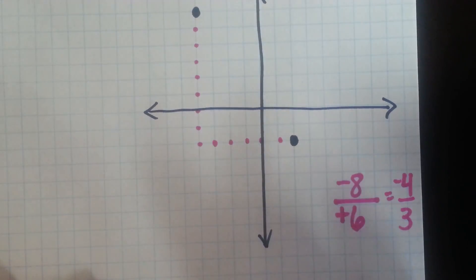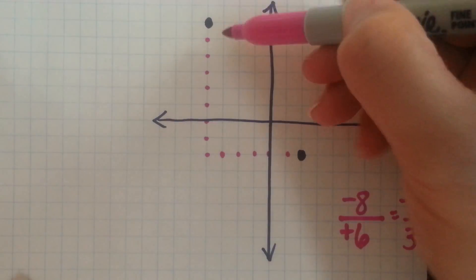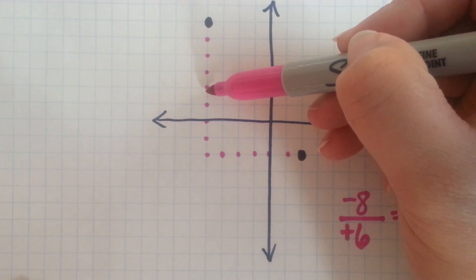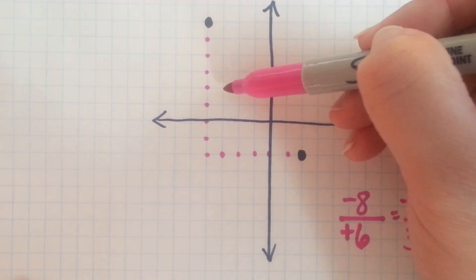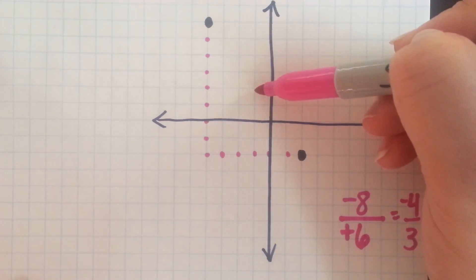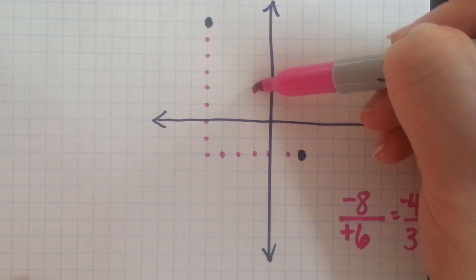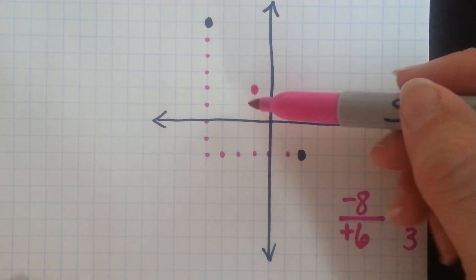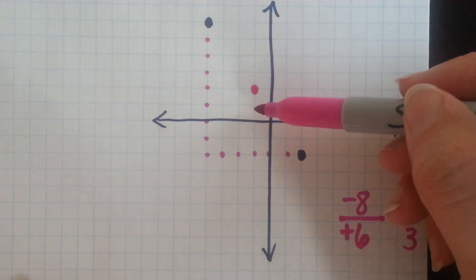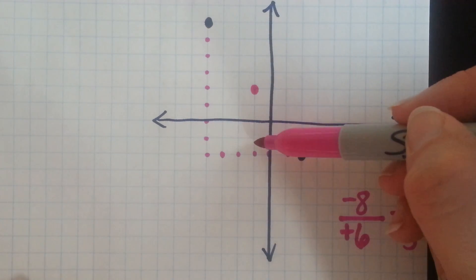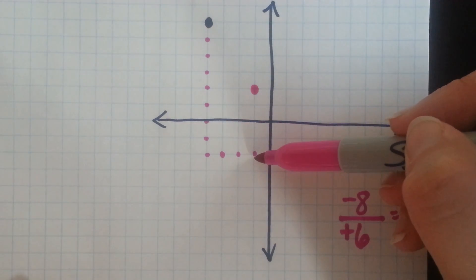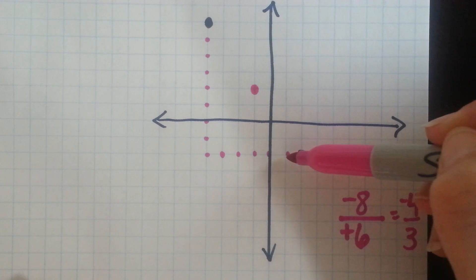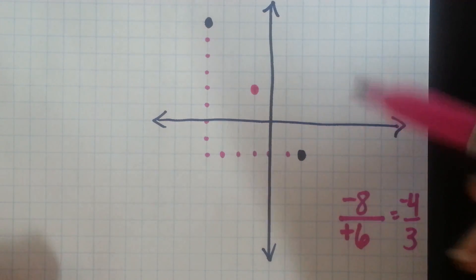That means if from this original point I went down four and over to the right three, that point would also be on my line. From that point, if I go down four and over to the right three, I'm back on that line.